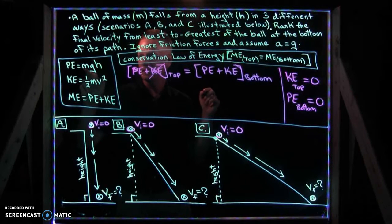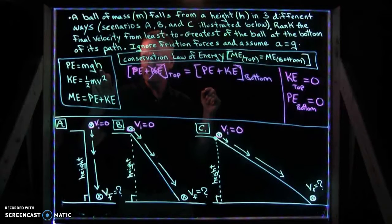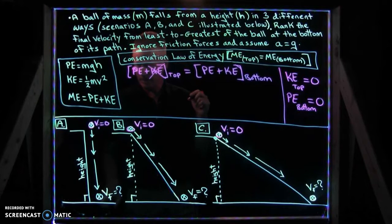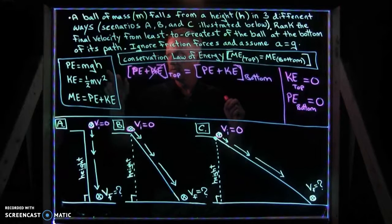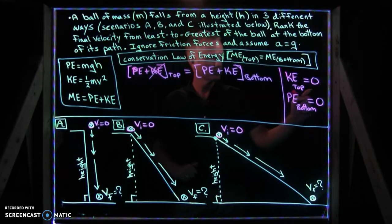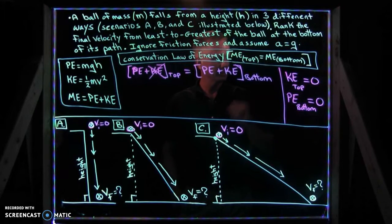Another thing that helps us resolve this is the potential energy at the bottom of the path for all three scenarios would be zero as well. Because the potential energy is defined as its mass times the g-value constant times its height. And at the bottom of the path, it has fallen its height down to height zero. Zero times anything is zero. So that means zero potential energy at the bottom.